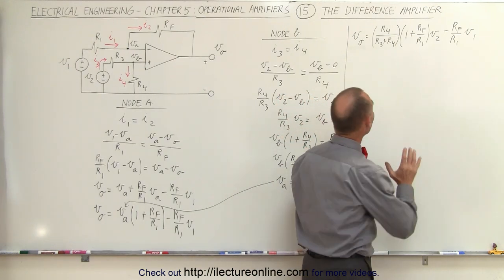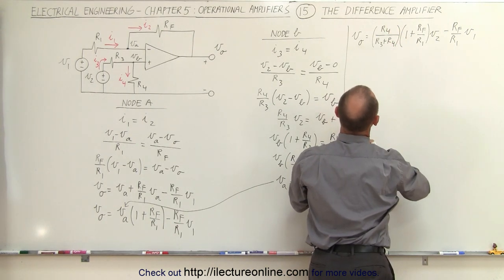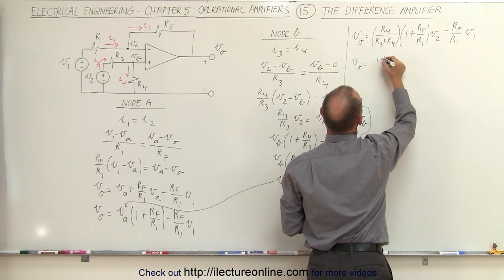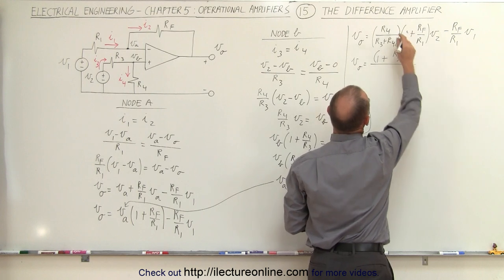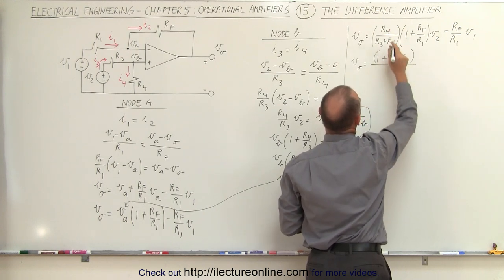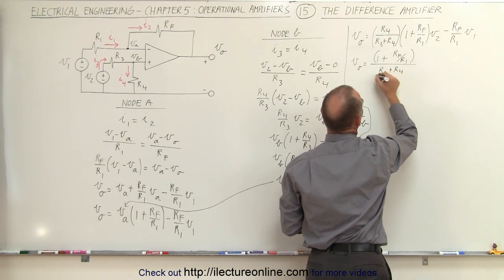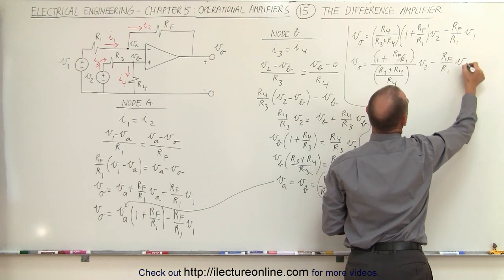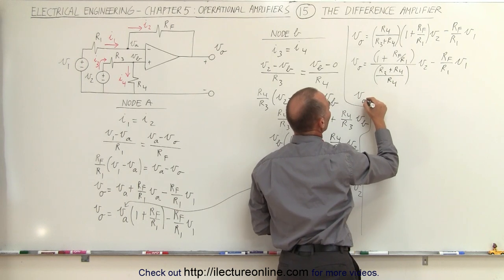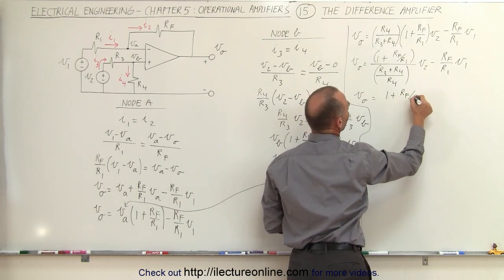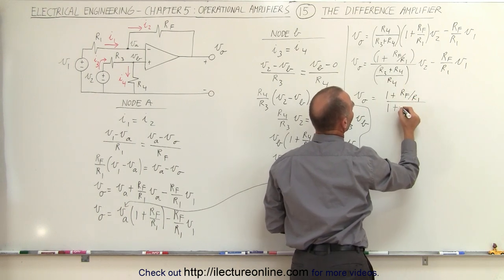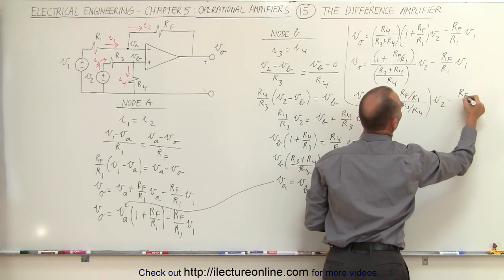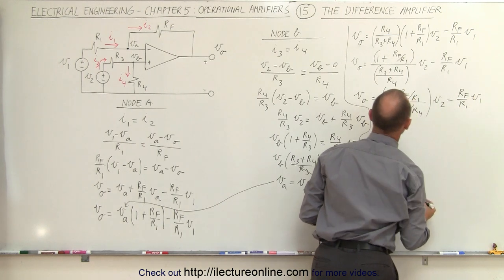Now we'll use an algebraic trick, moving R4 to the denominator. We write VO equal to (1 plus RF over R1) in the numerator, and by moving R4 to the denominator we write (R3 plus R4) divided by R4, times V2. Dividing the denominator into the numerator gives VO equals (1 plus RF over R1) divided by (1 plus R3 over R4), times V2, minus RF over R1 times V1.